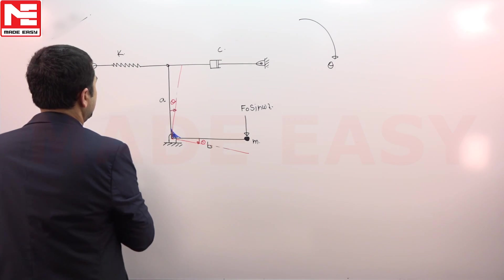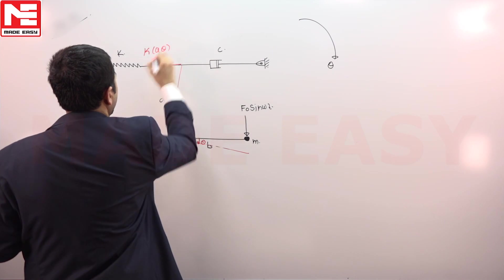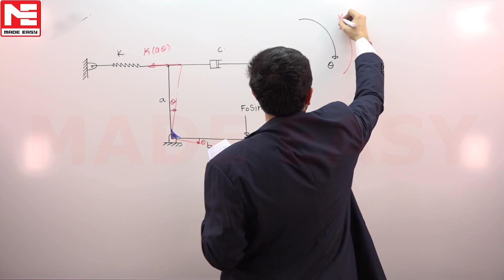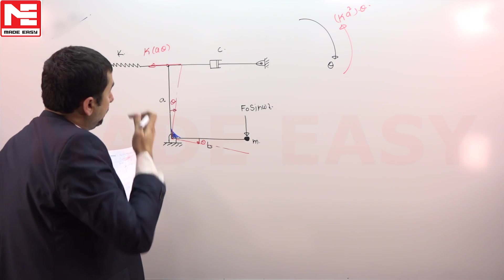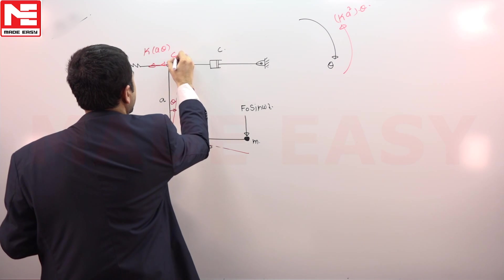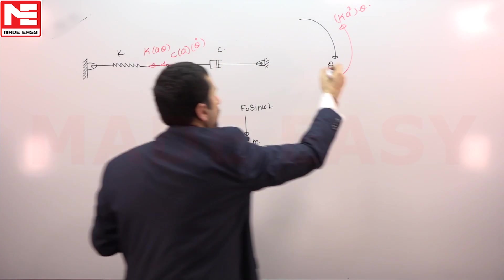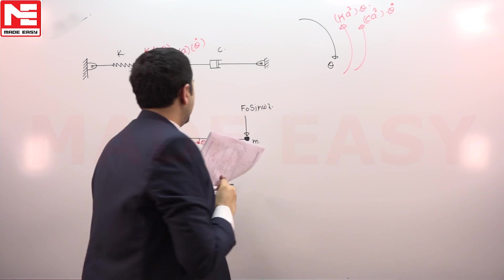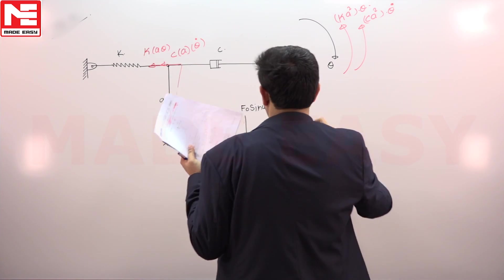Backward force k into a theta—its torque will be in anticlockwise direction, into a more, so k into a square theta. And this damper will be compressed by a theta—the damping force will be c x dot—so that force c into a theta dot, into a more, so this is c into a square into theta dot.